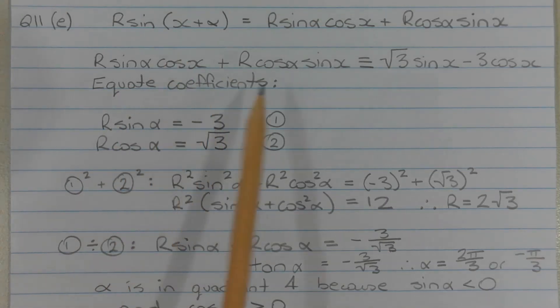Equating the coefficients of cos x and sine x on both sides of the identity, we have r sine alpha is equal to negative 3, and I've called that equation number 1, and r cos alpha is equal to the square root of 3, and I've called that equation number 2.